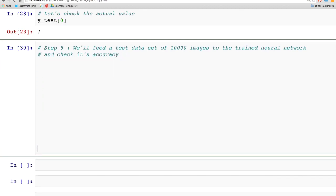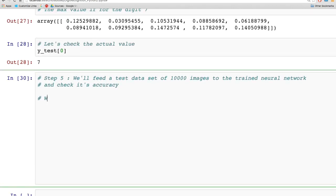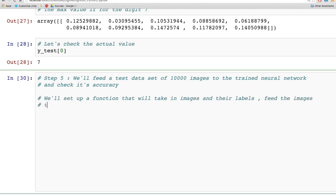Now let's feed a test dataset of 10,000 images and compute the percentage accuracy of the neural network. Similar to how we set up a function for a single output, we need a function that takes an array of images and their labels, predicts the output for each image, and computes the accuracy based on the actual labels.